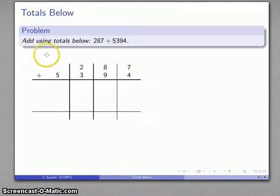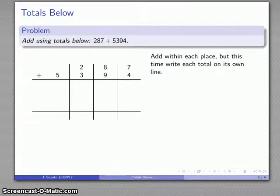So there's our place value chart. I haven't bothered writing the unit names, but my addends 287, 5394. I'll add within each place, and for organizational purposes, I'll write each total on its own line. I can add left to right, right to left, or skip around and add whichever columns I want to. I'll add left to right. So 5, 2 plus 3 is 5, 8 plus 9 is 17, 7 plus 4 is 11.